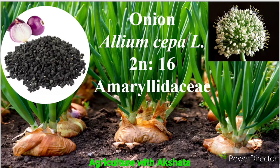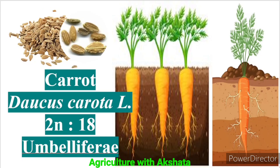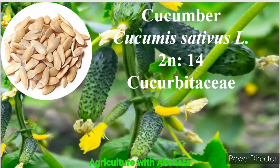Onion: Allium cepa, 2n = 16, Amaryllidaceae family. Carrot: Daucus carota, 2n = 18, Apiaceae family. Cucumber: Cucumis sativus, 2n = 14, Cucurbitaceae family.